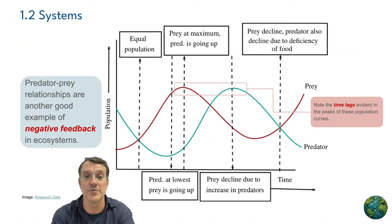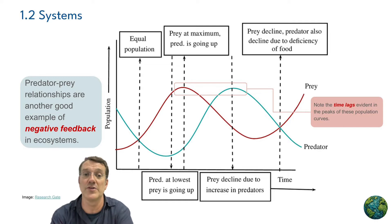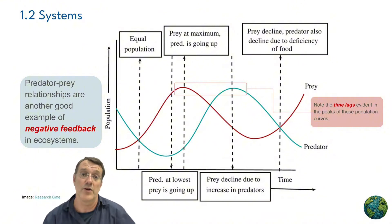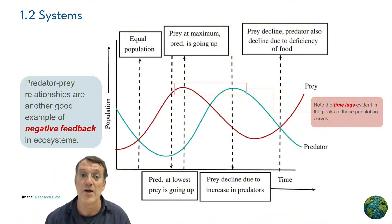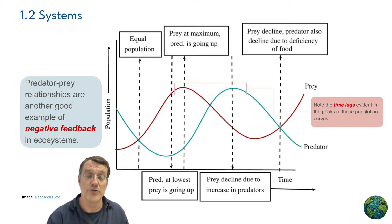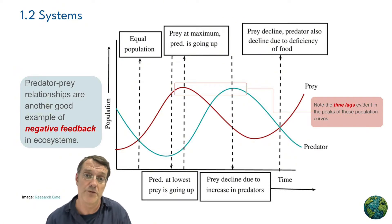In ecosystems, predator-prey relationships also demonstrate negative feedback. As prey populations increase, there's more food available for predators, so predator populations rise. When the predator populations rise, they eat more of the prey, so the prey numbers decline, which then induces another decline in the predator numbers.